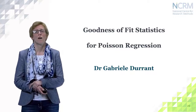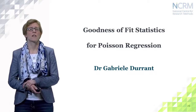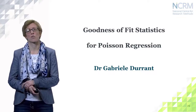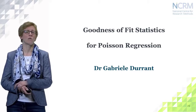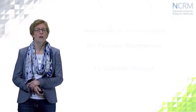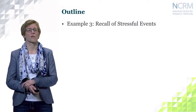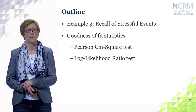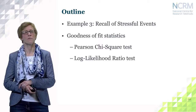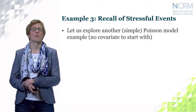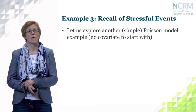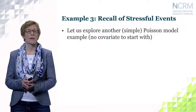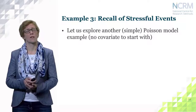I will now look at goodness-of-fit test statistics for Poisson regression. We want to test whether a particular model really fits the data, or whether we need to extend our model and include more covariates. I will first discuss another example, then discuss the goodness-of-fit test statistics — the Pearson chi-square test and the log-likelihood ratio test. The example is the recall of stressful events, starting with a simple Poisson model without covariates, then extending to a model with covariates.